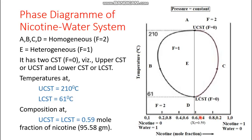In the case of the solution, there is a solution of water in nicotine. This is the aqueous solution and a nicotinic solution. We have to consider this nicotinic solution, and in the case of the solution there is 0.59 mole fraction of nicotine and 0.41 mole fraction of water. We have to move the nicotine from the CST, moving the x-axis parallel.